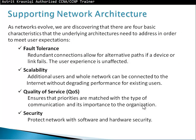To support the network architectures, as networks evolve, we are discovering that there are four basic characteristics that underlying architectures need to address in order to meet user expectations — it's all about making sure the users are happy. First is fault tolerance. Fault tolerance is achievable by having redundant connections or alternative paths. One server is like zero servers — you always have to have redundant servers. If one fails, the other one will take over. Without redundancy, there's not going to be reliability.